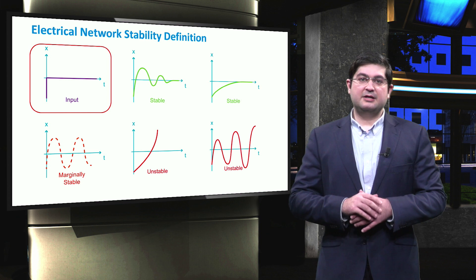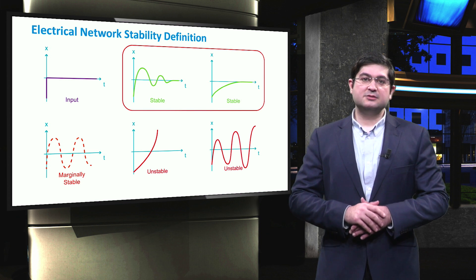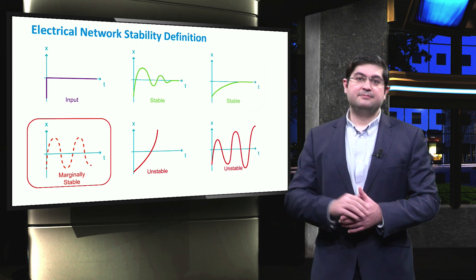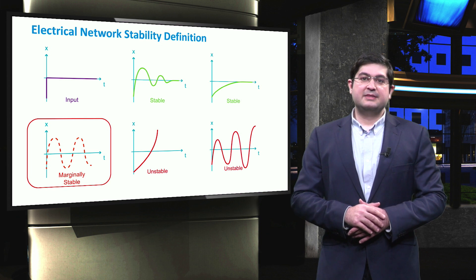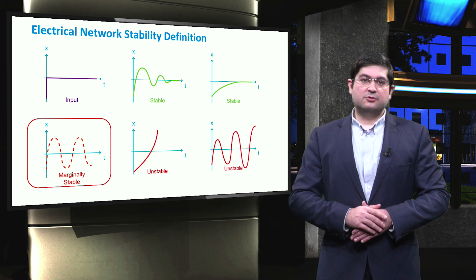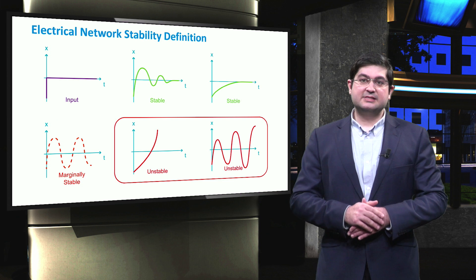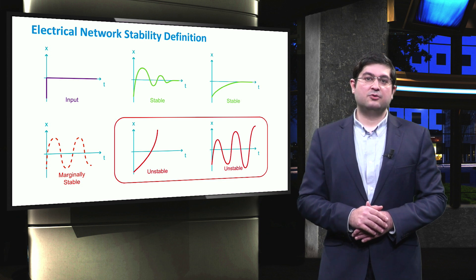If the system remains stable after the disturbance, then the response could be either oscillatory or non-oscillatory. If the system is marginally stable, then it will never reach a stable point and remains oscillatory. And finally, if the system has an unstable response, it could be either with or without oscillations.